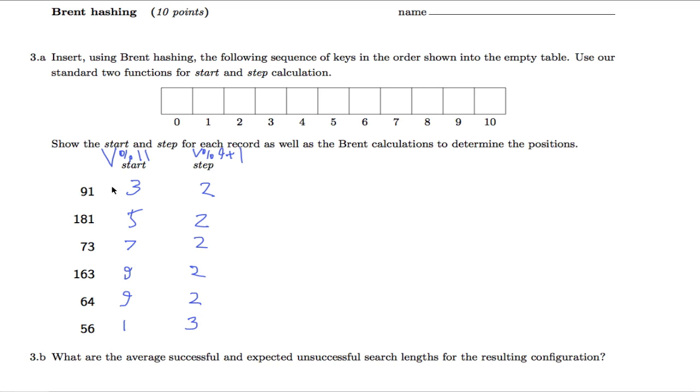If we're looking just at the start value here, they're all different up to here. 3, 5, 7, 9 are all different starting points, so they're just going to go into the right place with no further probing, no collisions. So 91 goes to 3, 181 goes to 5, 73 goes to 7.